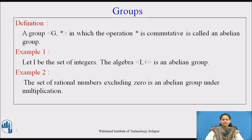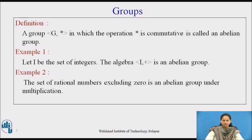Here are a number of examples to understand. Example number 1: let I be the set of integers. The algebra I, plus is an abelian group. Because we know that the operation of addition is always commutative such that for any two elements a, b which belong to I, a plus b is the same as b plus a. It also holds the property of associativity because a plus (b plus c) is the same as (a plus b) plus c. Also, it holds the property of identity where the identity for the addition operation will be 0, and the inverse is also present in the set of integers I. So along with these three properties required for a group, the operation plus is also commutative — that is why the algebraic structure I, plus is termed as an abelian group.